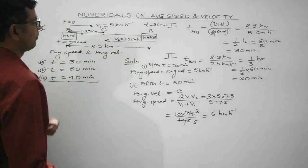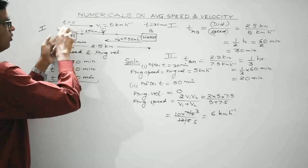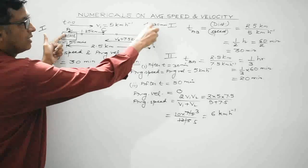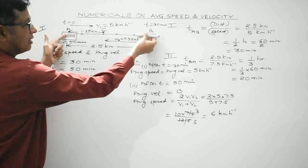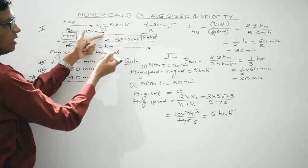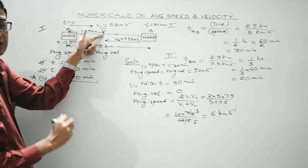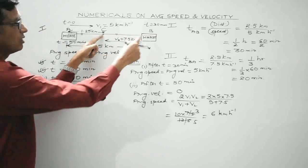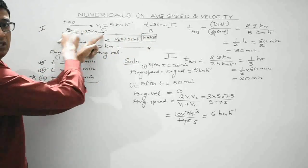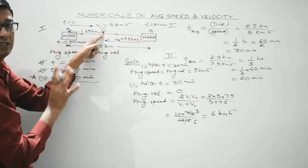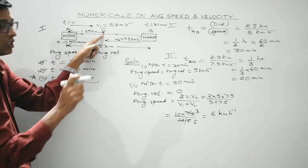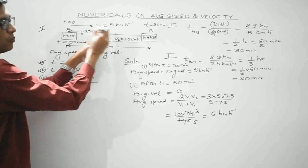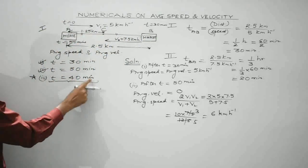The midpoint is at 1.25 km from A, since half of 2.5 km is 1.25 km. So at t = 0 the person starts at A, reaches market B at t = 30 minutes, and reaches point C (the midpoint on the return) at t = 40 minutes.